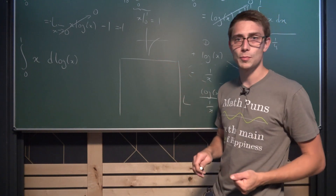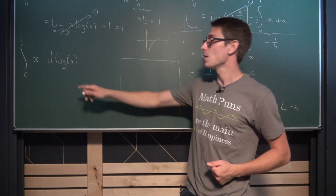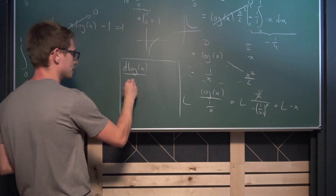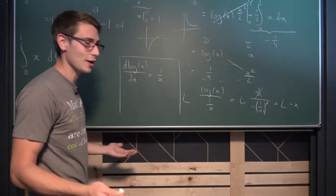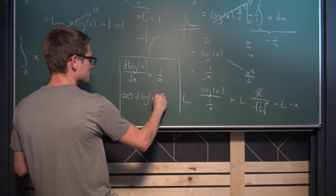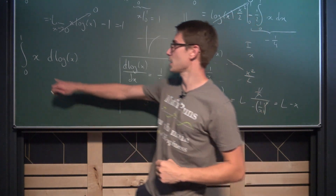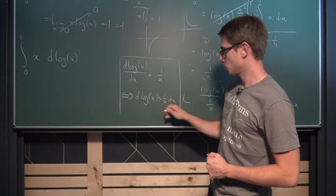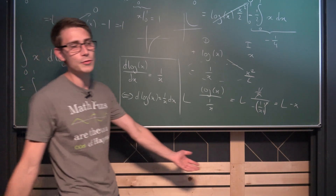Using Leibniz notation: differentiating ln(x) gives 1/x, and multiplying both sides by dx gives d(ln x) = (1/x) dx. So this mnemonic device lets us rewrite the Riemann-Stieltjes integral directly. Our integral of x with respect to ln(x) becomes the integral from 0 to 1 of x times 1/x dx. The x and 1/x cancel, leaving just the integral of 1 dx from 0 to 1, which simply yields 1.